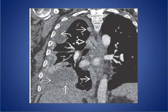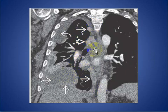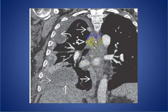Here we have a CT coronal scan with multiple metastases involving the pleura, associated with pleural effusion and lymphadenopathy in this patient from renal cell metastasis.